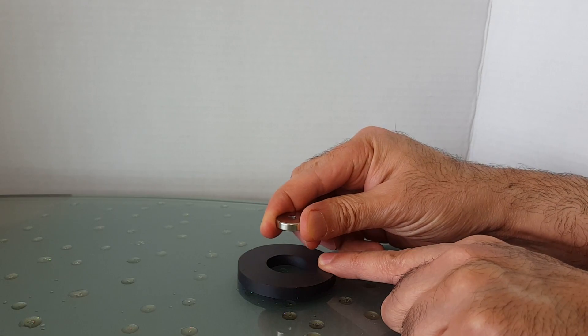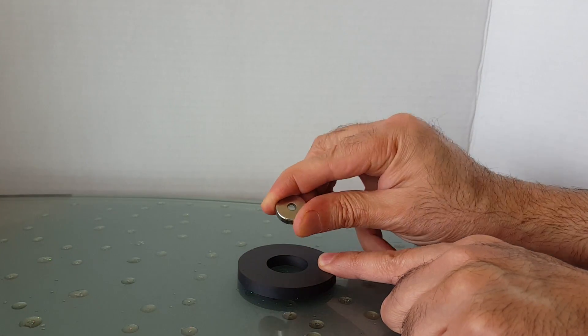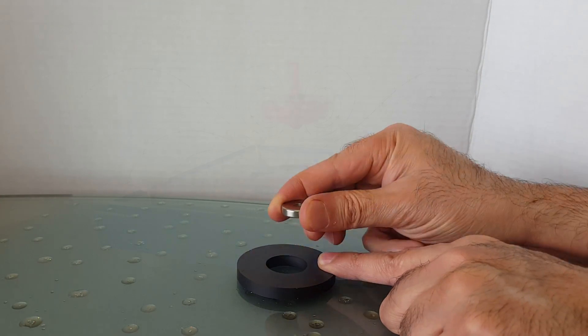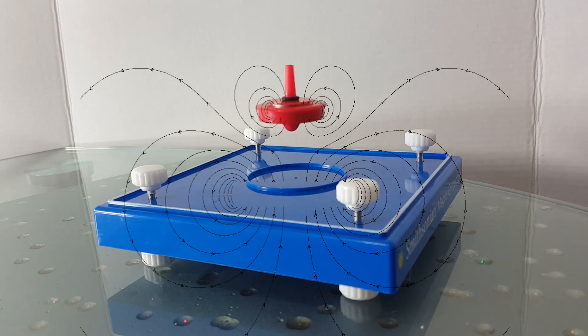While trying to levitate, at the slightest imbalance, it wants to flip over and hit the magnetic base below. Now, let's take a look at all the forces involved.